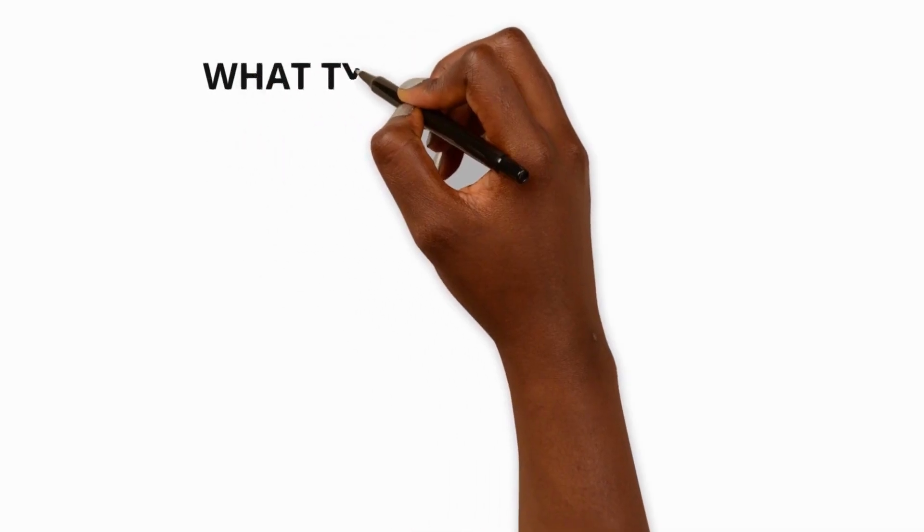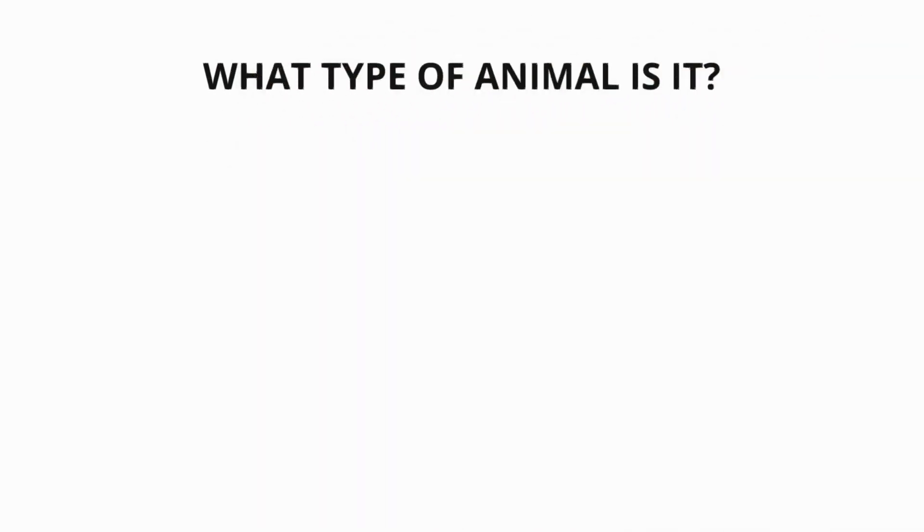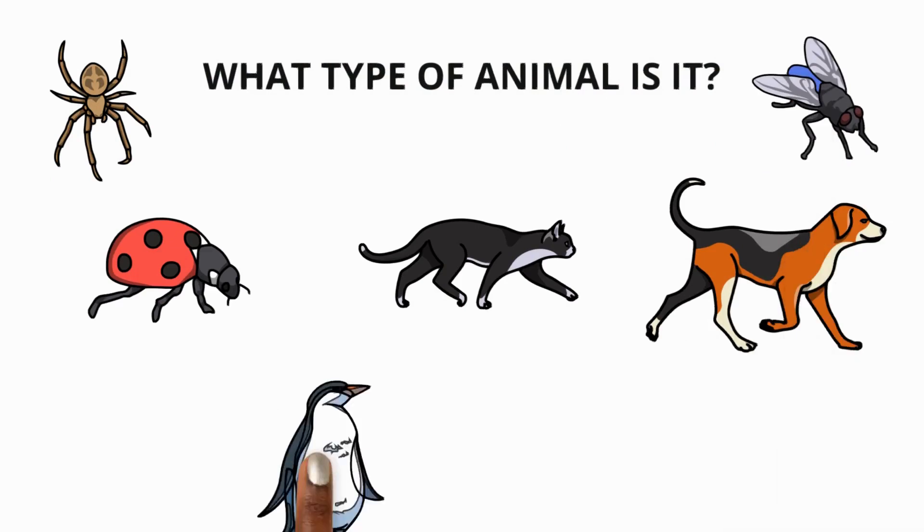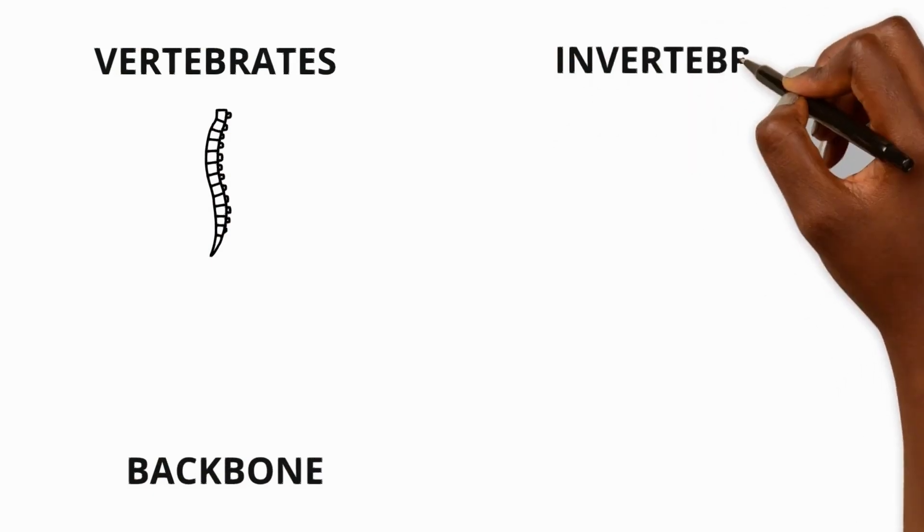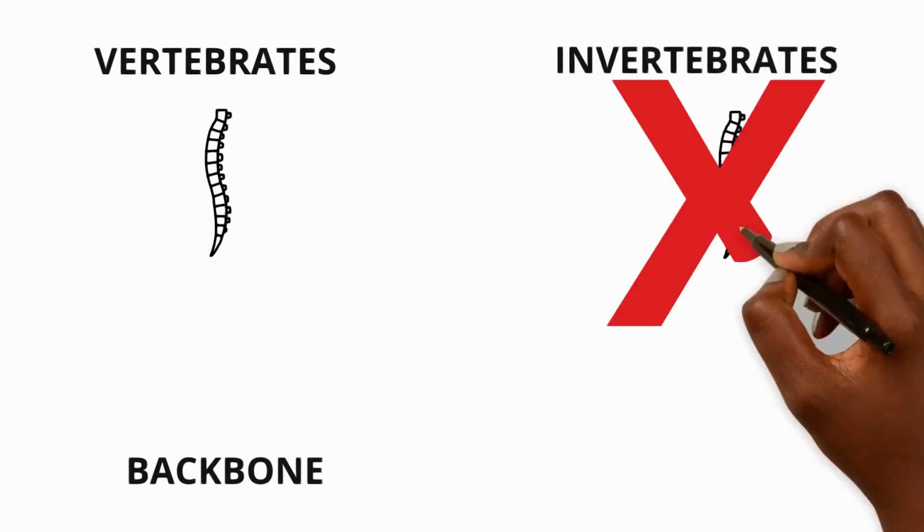And if we decide something is an animal we can ask questions to find out what type of animal it is. One way to do this is to group them into vertebrates, animals with a backbone or invertebrates, animals without a backbone.